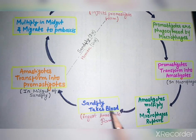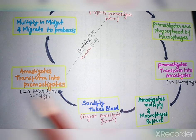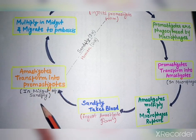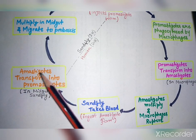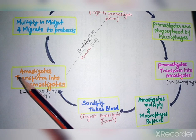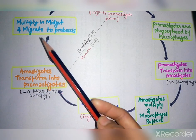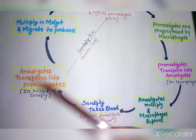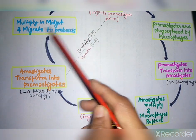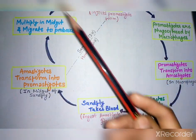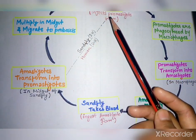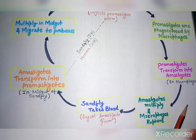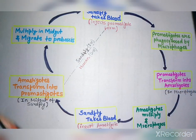When the sandfly takes another blood meal, it ingests the amastigote form. The amastigotes enter the midgut of the sandfly, where they are converted into promastigotes and multiply. They then migrate to the proboscis of the sandfly. When the sandfly bites again, it injects the promastigote form, and the cycle continues.